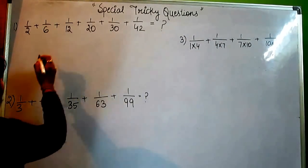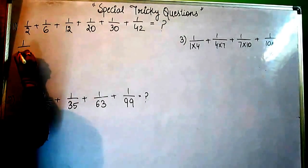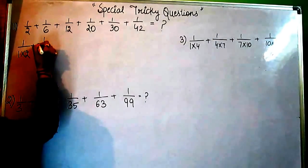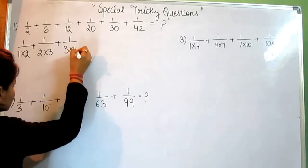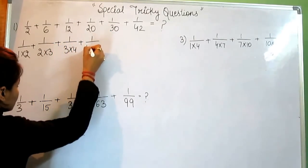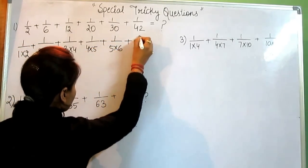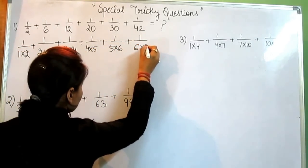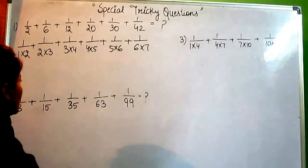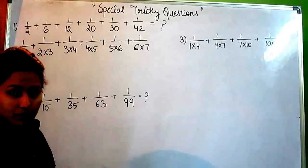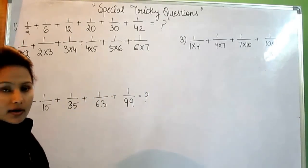Our first question is this: 1 by 2 can be written in this form, 1 by 6 can be written in this form. We can write these numbers in this form. And now, one thing should be remembered, that is, this sequence should be in ascending order.